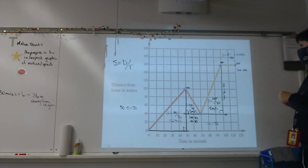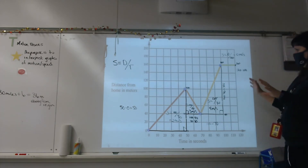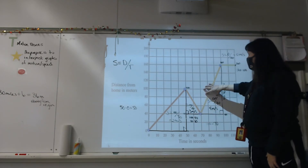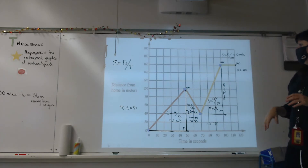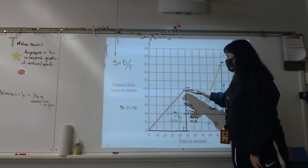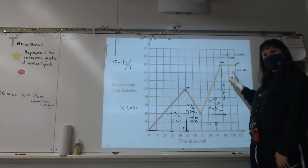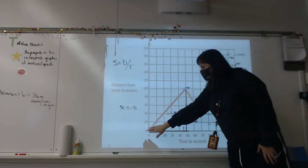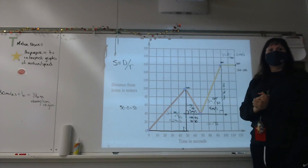Now you're going to try one of these. You'll have Sylvia's graph and you have to calculate how fast she's moving in four sections. Then you have to tell the story: is she going away, is she coming back toward home, is she stopped at any point, and where does she finally wind up?